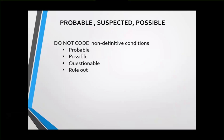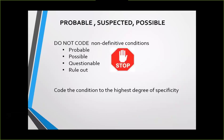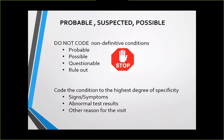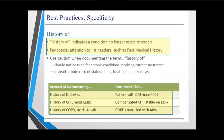Always code the condition to the highest degree of specificity — not symptoms or abnormal tests alone. 'History of' indicates the condition no longer exists, so avoid that phrasing. Instead of 'history of diabetes,' say 'patient with diabetes since 2009.' Instead of 'history of CHF on LASIX,' say 'compensated CHF, stable on LASIX.' Instead of 'history of COPD, meds ADVAIR,' say 'controlled COPD with ADVAIR.' If it's not documented in the medical record, it did not happen.